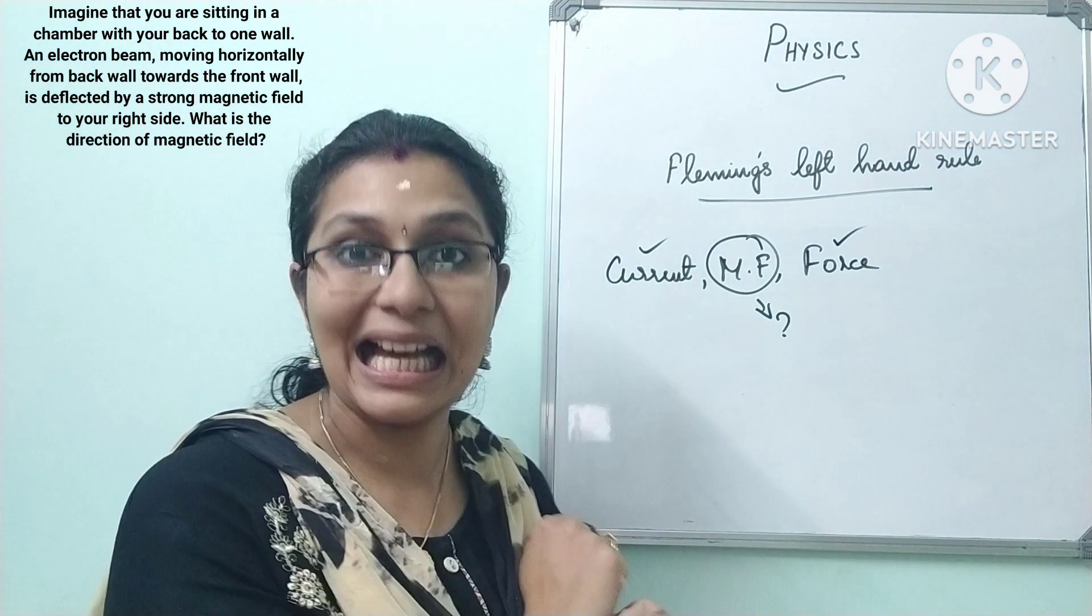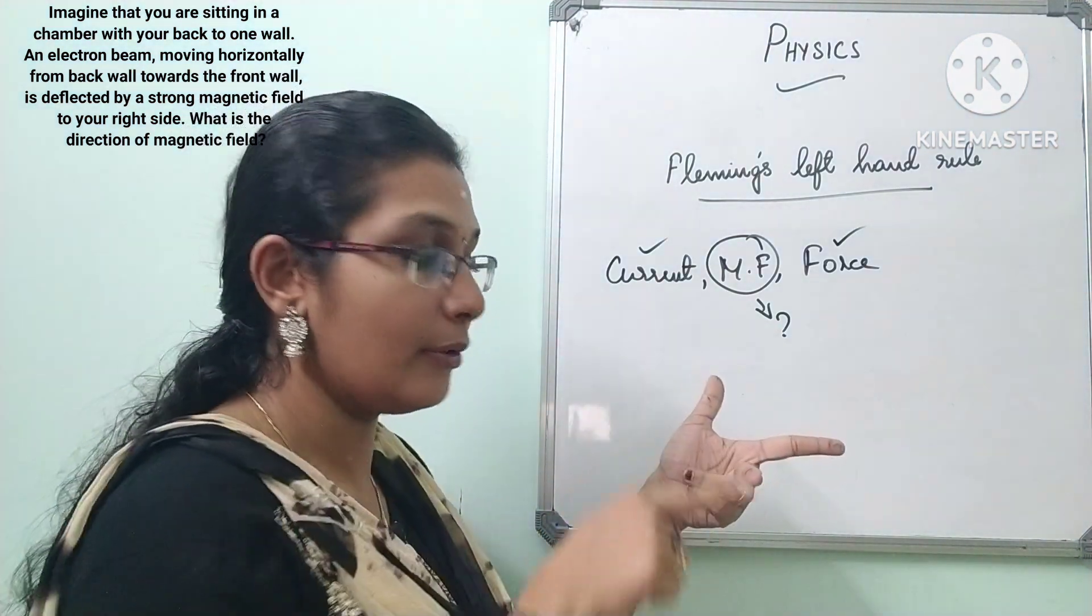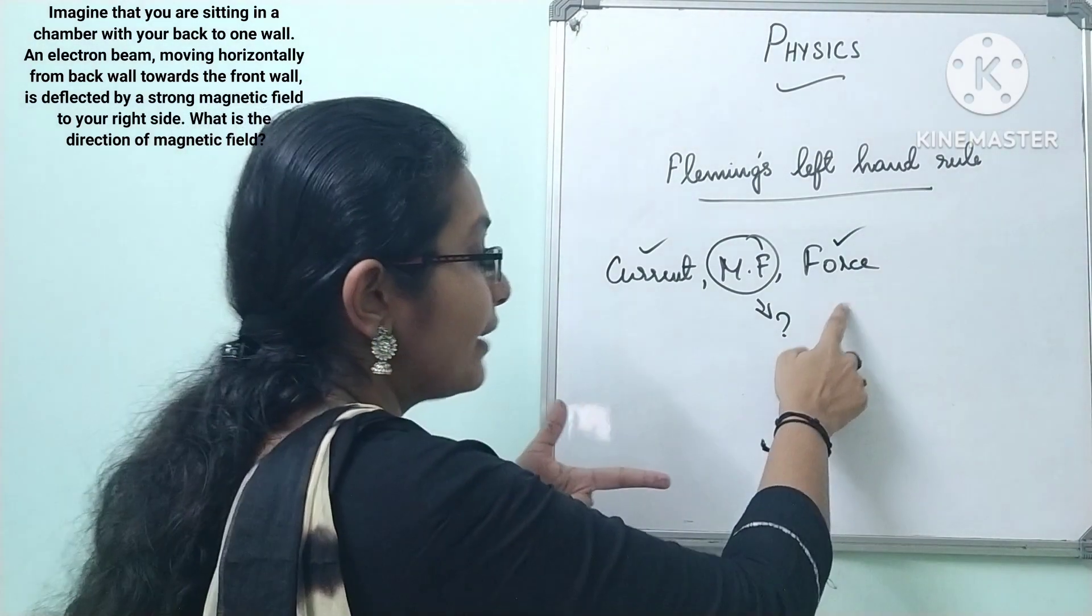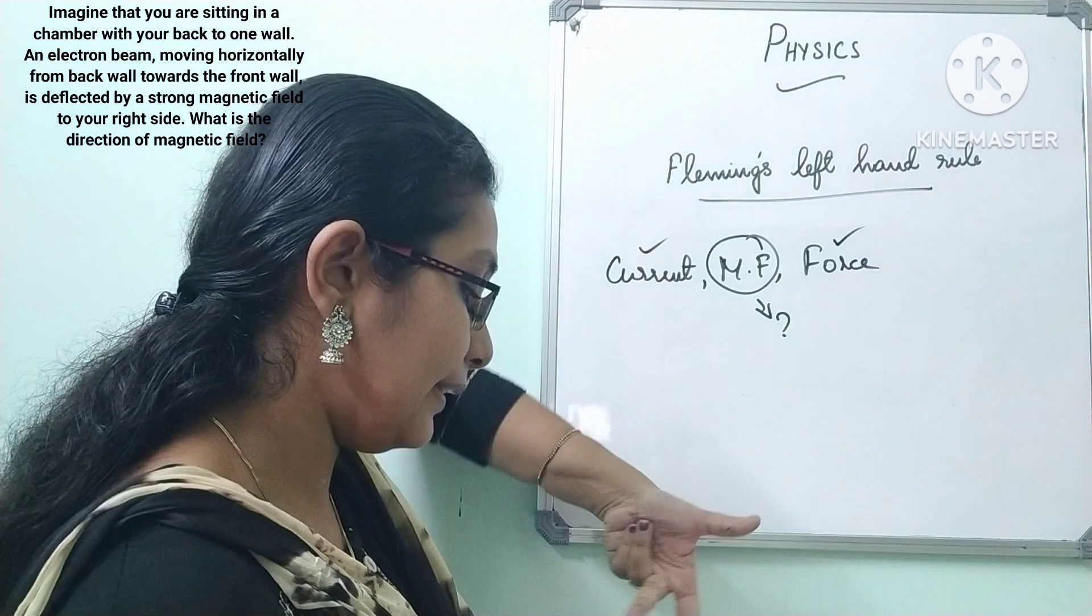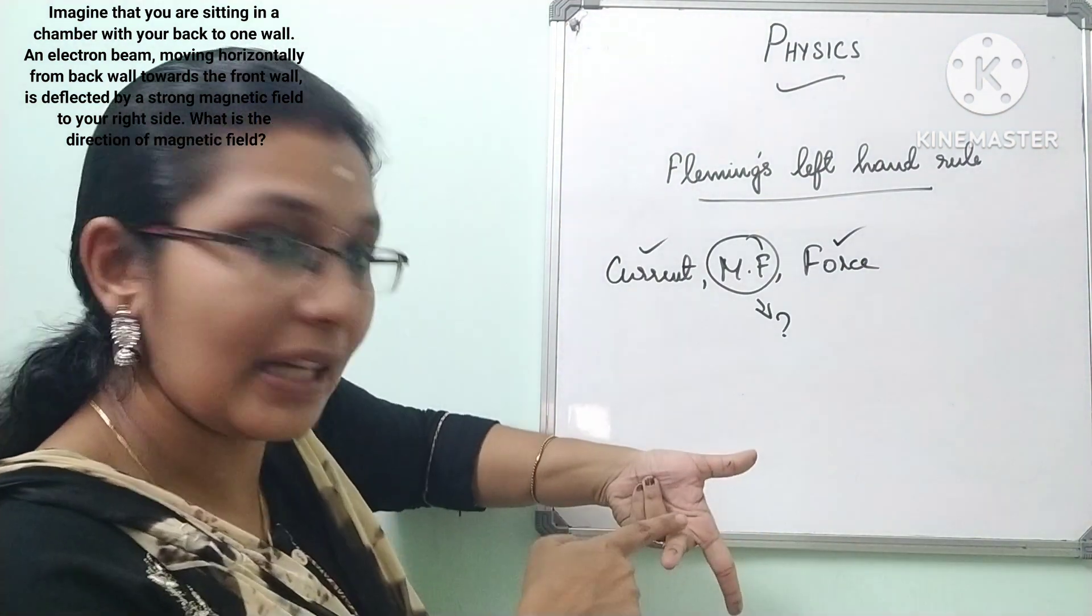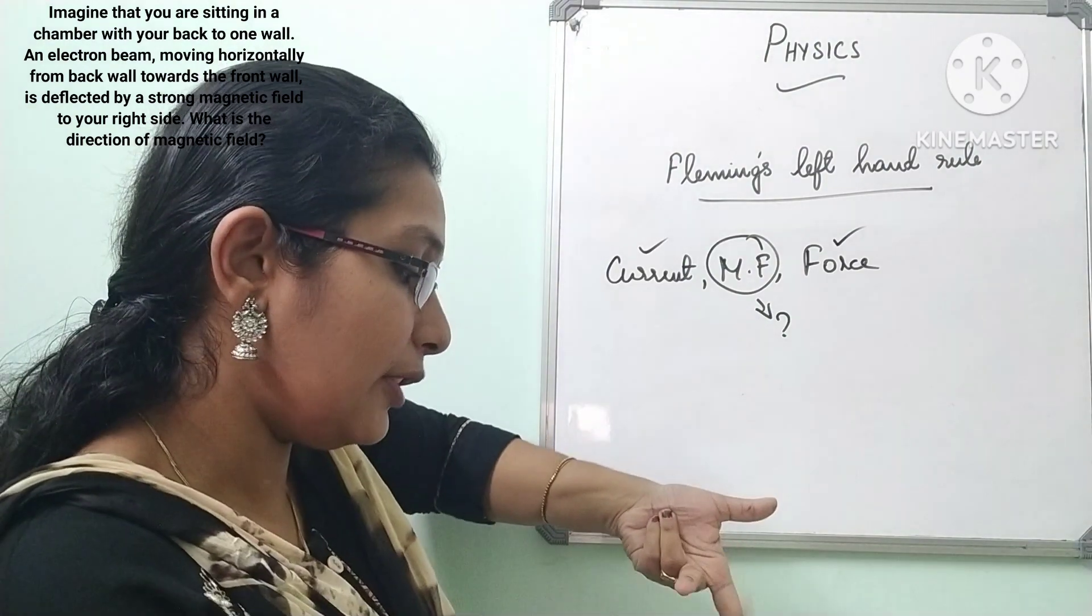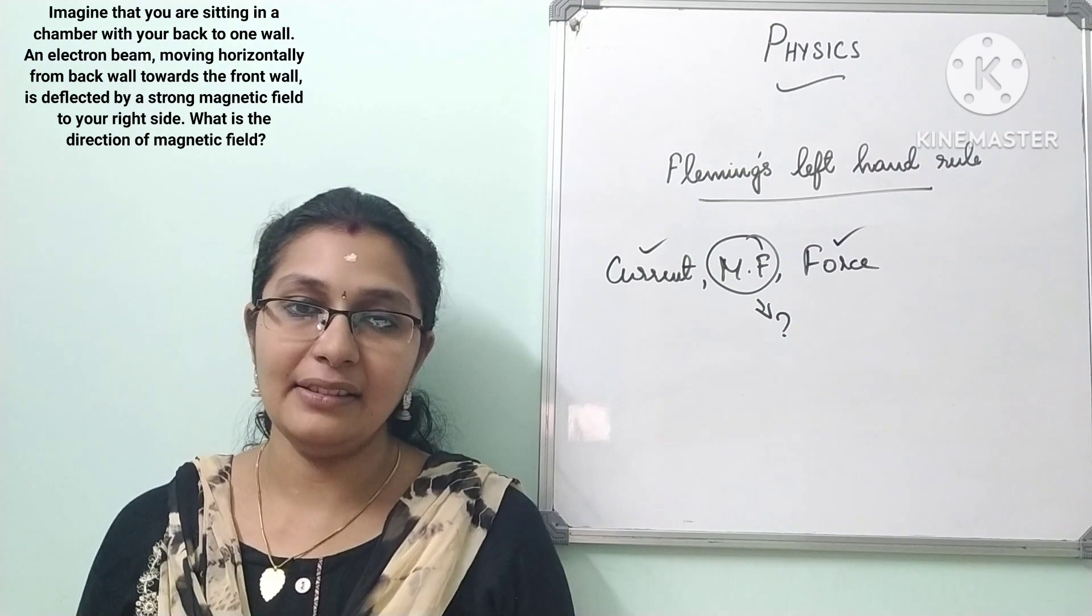The direction of current is from front to back. Direction of force is towards my right side. So shift like this and check. It is on your right side and the direction of current is front to back. So what is the direction of the magnetic field? Downwards. Downwards is your answer.